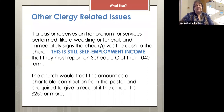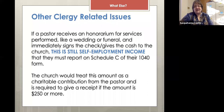If your pastor receives an honorarium for doing something like a wedding or a funeral, and they immediately sign the check over or give the cash to the church, this is still self-employment income they are responsible to report on their Schedule C in their 1040. The church would just treat this amount as a charitable contribution, just like any other charitable contribution from the pastor. If the amount is $250 or more, a receipt needs to be issued, just like any other person giving a gift to the church. A clergy member cannot disregard this as being paid to the church — if it was made out to them or given to them, they have to declare it.